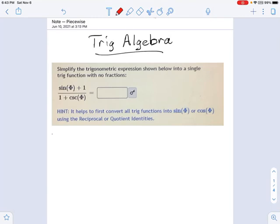This problem is telling us that we're going to simplify this fraction into a single trig function with no fractions. And that might seem like a bit of a tall order at first, but it gives us a hint. Try converting all trig functions into sine or cosine using the reciprocal or quotient identities, and that's a great hint.